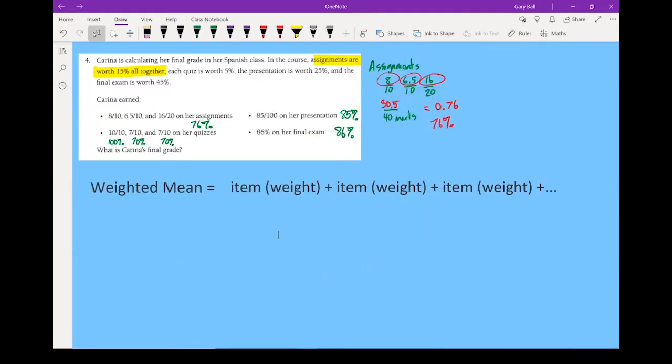All right, to calculate our weighted mean, let's start putting all of our items in. First thing we're going to do is those assignments. So we have the item times the weight. So the item, she got a total of 76% on her assignments. And that has a weight of 15%, so 0.15. Plus the next item, which is her quizzes, and each quiz is worth 5%. So first quiz she got 100%.